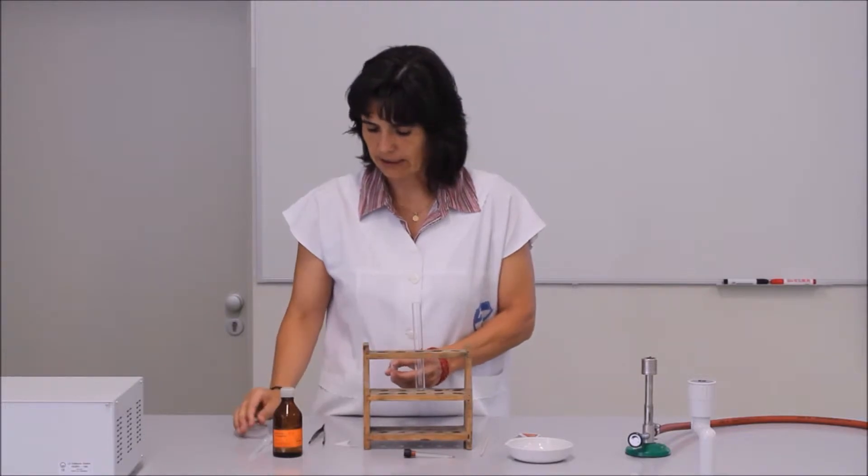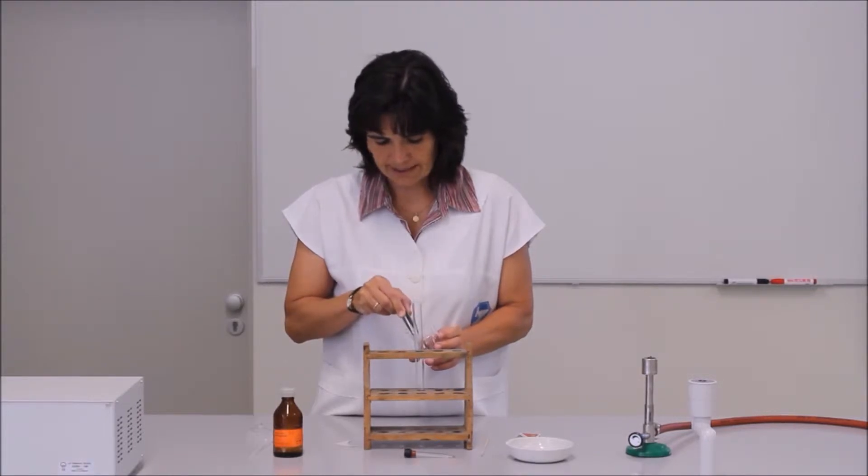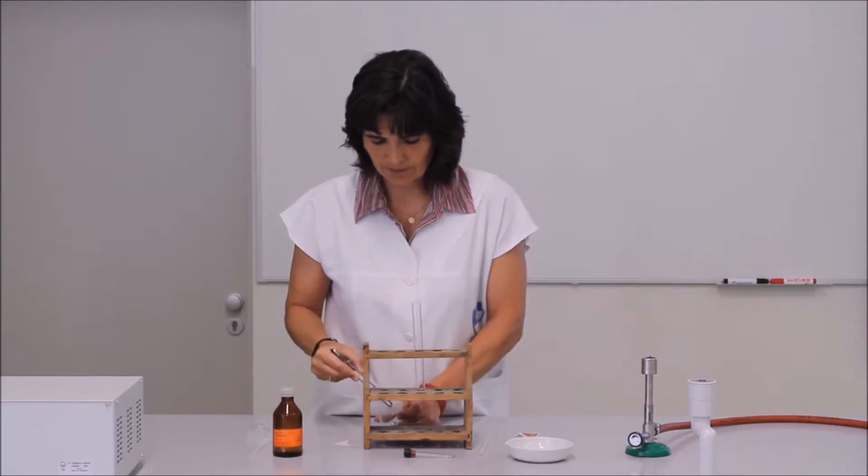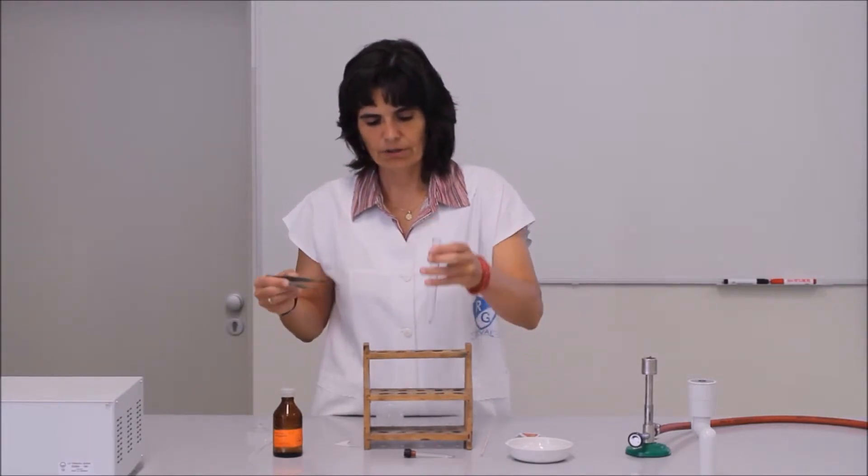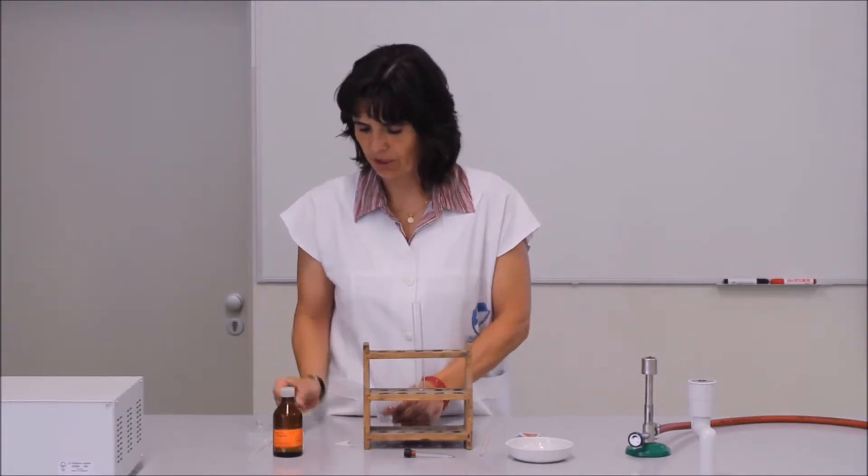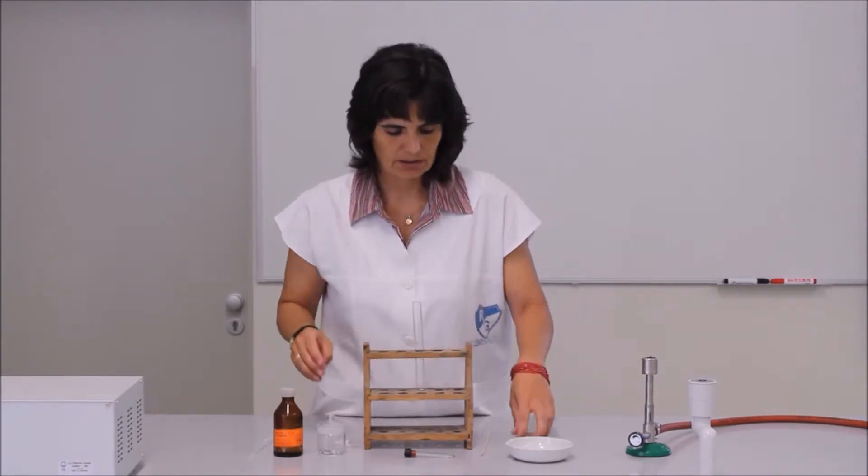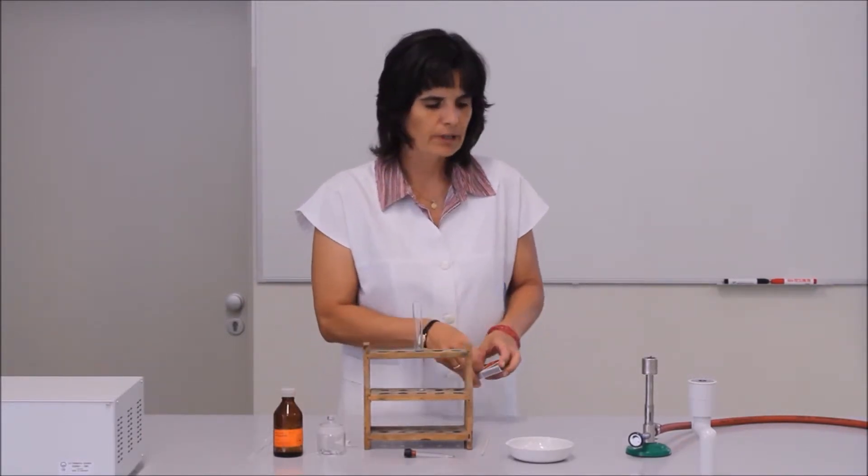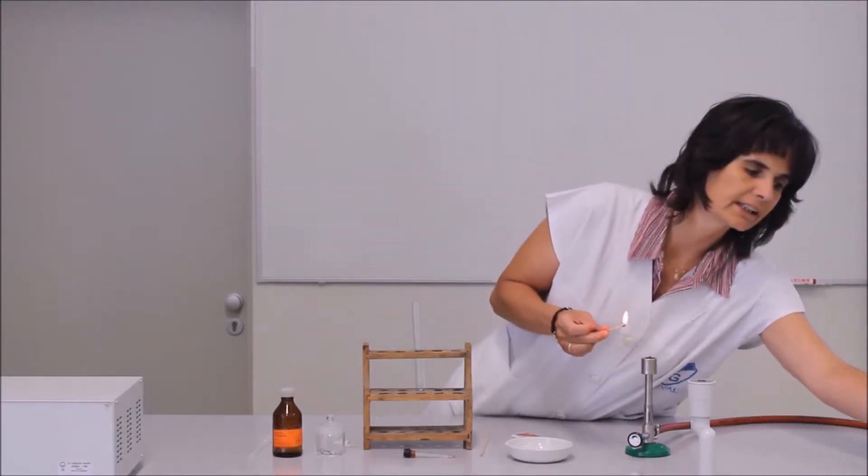A hidrogéngázt laboratóriumi körülmények között legegyszerűbben úgy állíthatjuk elő, hogy cink darabkára sósav oldatot csepegtetünk. Finoman engedem bele a kémcsőbe, hogy ki ne üsse az alját. Közben beállítom a bunsen égőt.